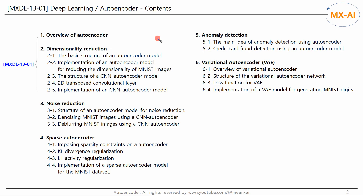Let's look at the full table of contents. In Chapter 1, we will look at the basic concepts of autoencoders. In Chapter 2, we will look at dimensionality reduction using autoencoders. We will build fully connected autoencoder and CNN autoencoder models to reduce the dimensionality of MNIST images. In Chapter 3, we will look at noise reduction using autoencoders. We will build a CNN autoencoder model to reduce noise and motion blur in MNIST images. In Chapter 4, we will look at sparse autoencoders, imposing sparsity constraints by applying KL divergence or L1 activity regularization, and apply a sparse autoencoder to the MNIST dataset.